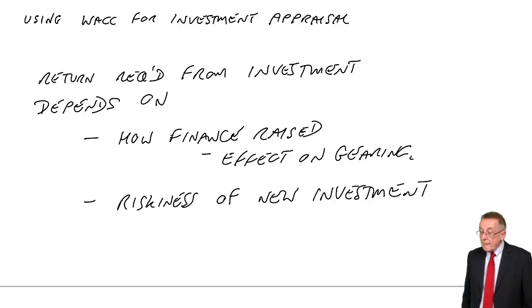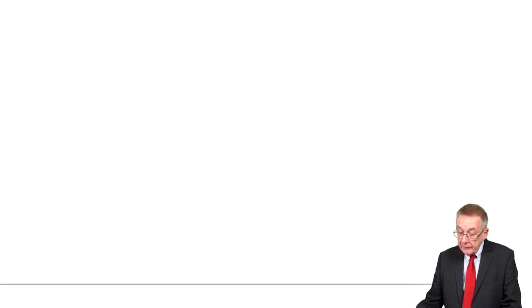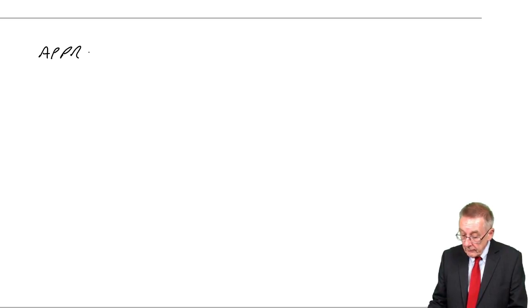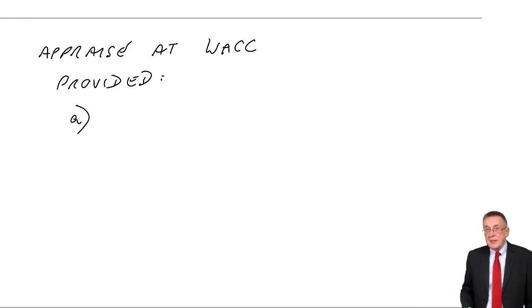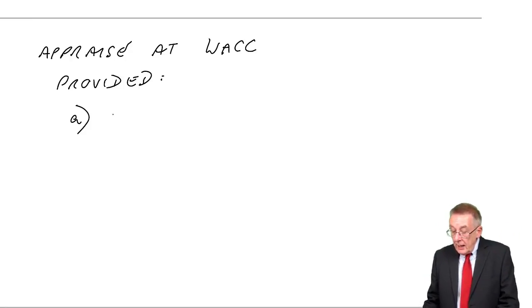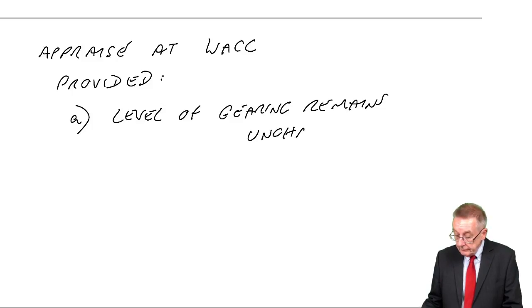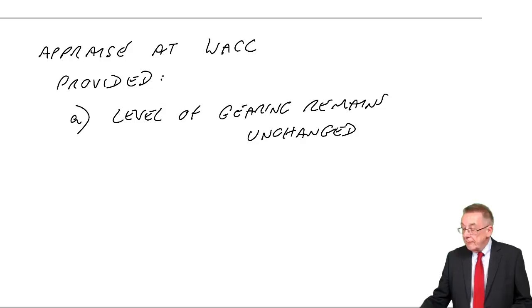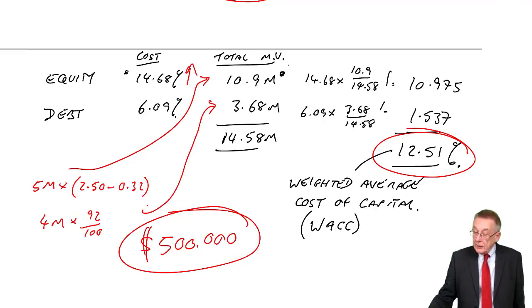Now, two things follow on from that. Firstly, it's only valid to appraise at the weighted average, therefore, provided two things. Explain and think about each carefully. Don't just learn a rule. Firstly, that the level of gearing remains unchanged. Think about that. We'll look back at this example. At the moment, our gearing is 10.9 equity, 3.68 debt, whatever proportions those are.